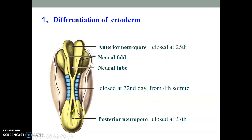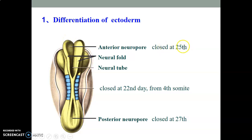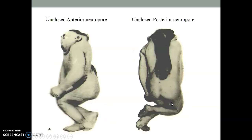The neural folds coming together begins at the center and then continues cranially and caudally, but it is completed at the cranial portion earlier, on day 25. The caudal neural pole closes two days later at day 27. So the superior two-thirds of the neural tube forms the brain, and the inferior third forms the spinal cord.